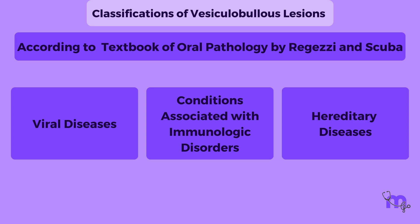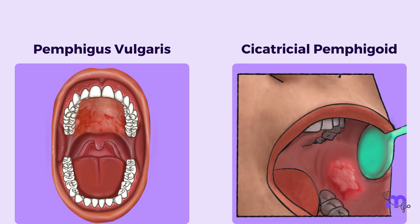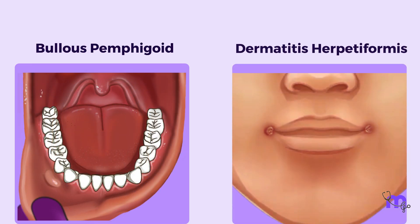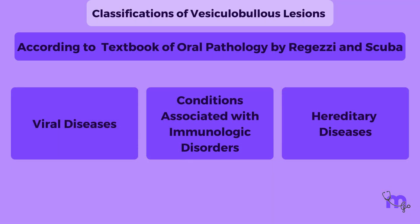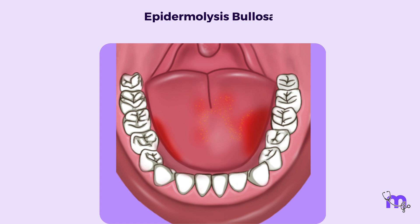The second category of conditions associated with immunologic defects includes pemphigus vulgaris, cicatricial pemphigoid, bullous pemphigoid, and dermatitis herpetiformis. The last category of hereditary diseases includes epidermolysis bullosa.